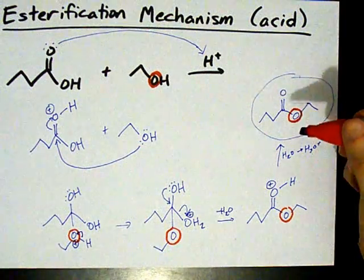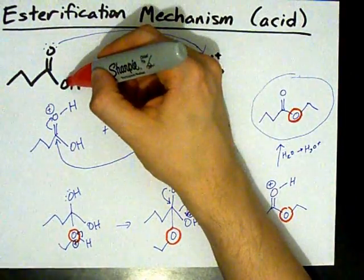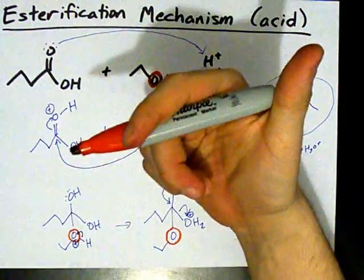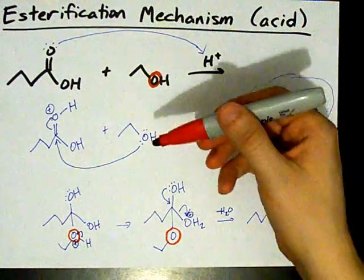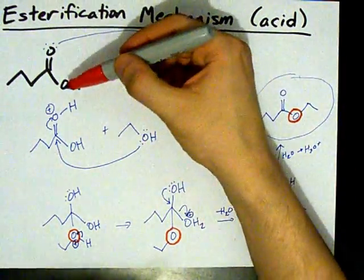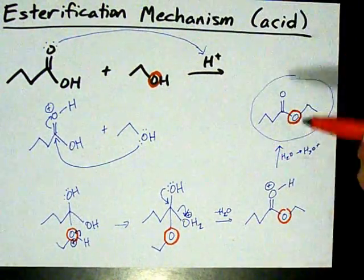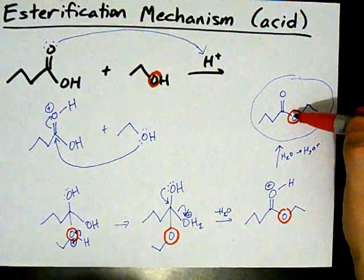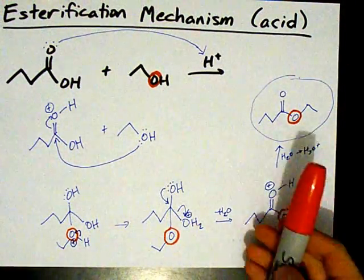One thing I want to point out: it's this oxygen here that does the attack and is attached in the ester — the oxygen in an ester came from the alcohol. It's not the original carbonyl oxygen; that oxygen itself is gone — it left as water. We know this from isotope studies. They made one oxygen O-16 and one O-18, and found that it was entirely oxygen-18 in the product. All these oxygens came from the alcohols.